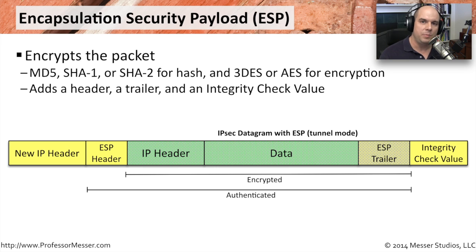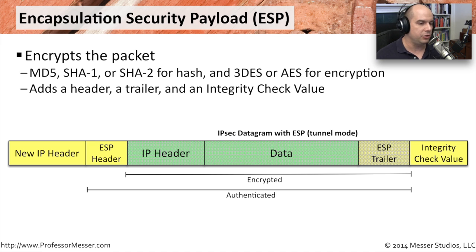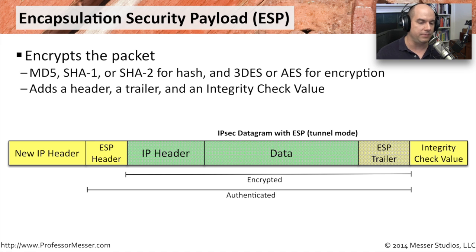The second IPsec protocol, Encapsulation Security Payload (ESP), provides both a hash and encryption of the data — hashing done with MD5, SHA-1, or SHA-2, and encryption done with Triple DES or AES. The ESP packet includes a header, a trailer, and an Integrity Check Value (ICV). The packet structure contains the IP header, ESP header, TCP/UDP information, data, then the trailer and ICV. This encapsulates everything together so that the data is encrypted and integrity can be verified to ensure it was received exactly as sent.